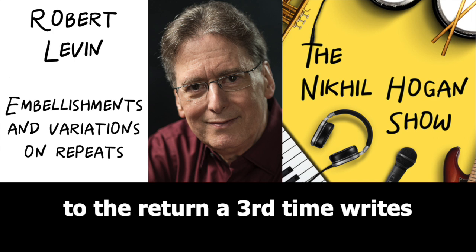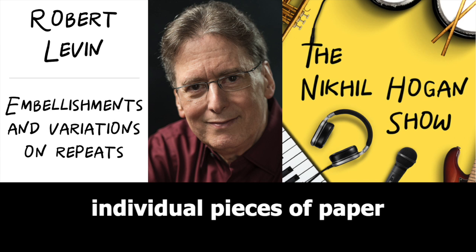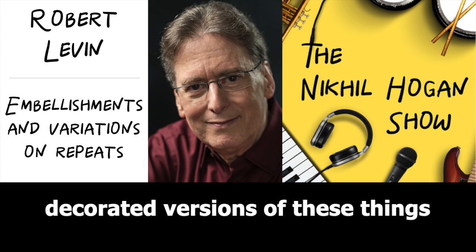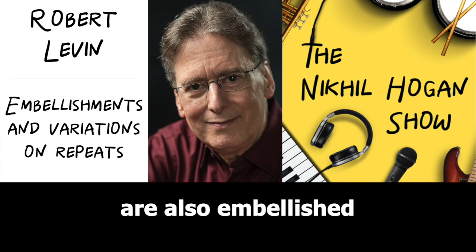On individual pieces of paper he writes 'variations' — at the first return, at the second return — and there he has written out decorated versions of these things. In addition to which, certain other passages are also embellished with fast scales and turns and other details.